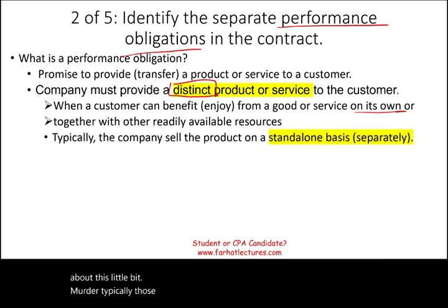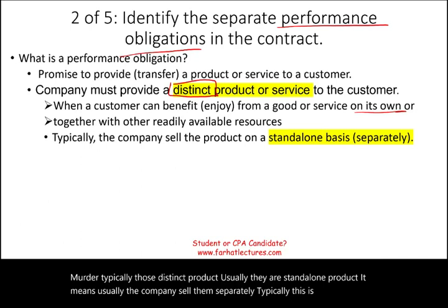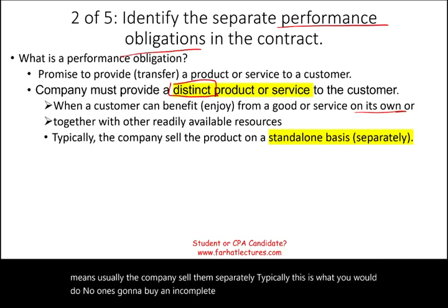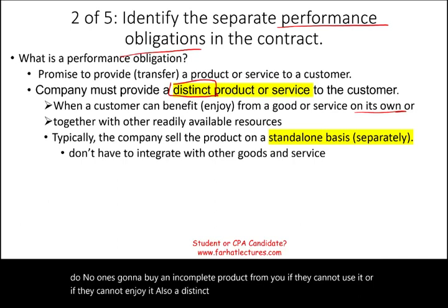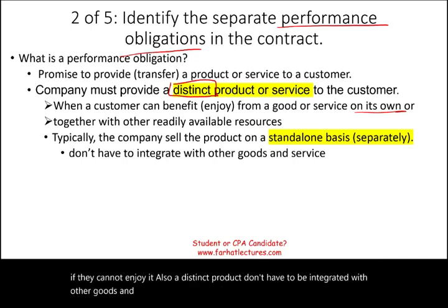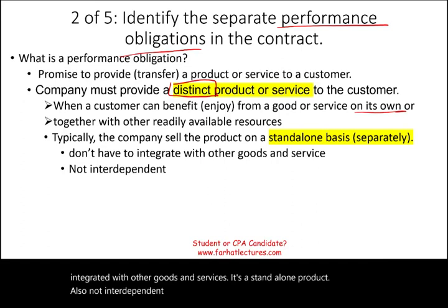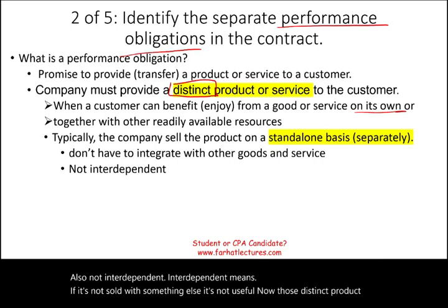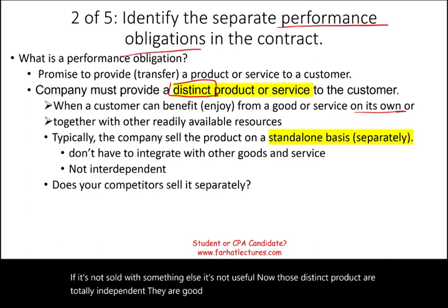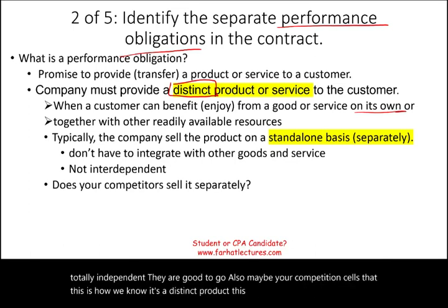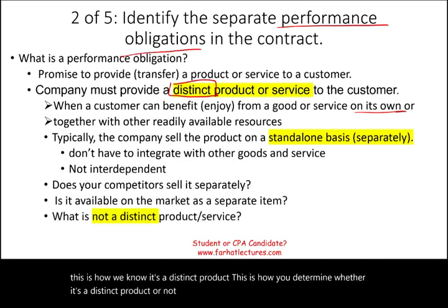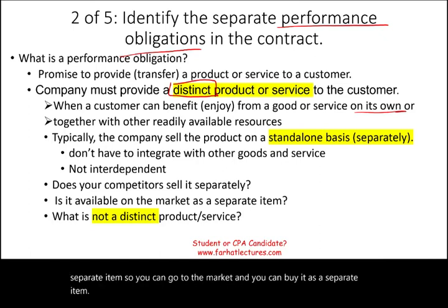Typically, distinct products are standalone products — it means the company usually sells them separately. No one is going to buy an incomplete product if they cannot use or enjoy it. A distinct product does not have to be integrated with other goods and services; it's a standalone product. Also, it's not interdependent — interdependent means if it's not sold with something else, it's not useful. Distinct products are totally independent; they are good to go. Also, maybe your competition sells it, and it's available in the market as a separate item. Those are the features you look for to find out if you have a distinct product.